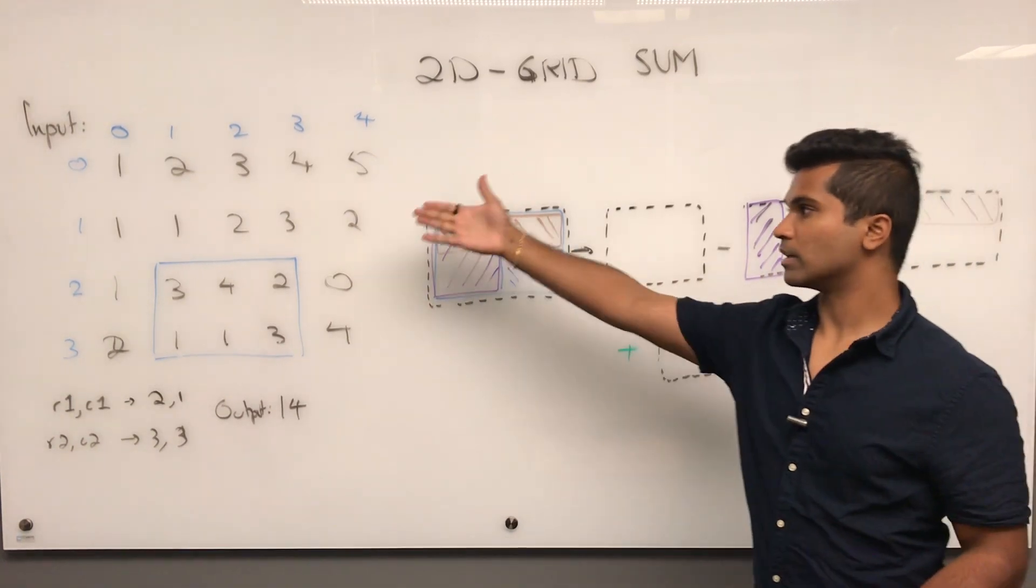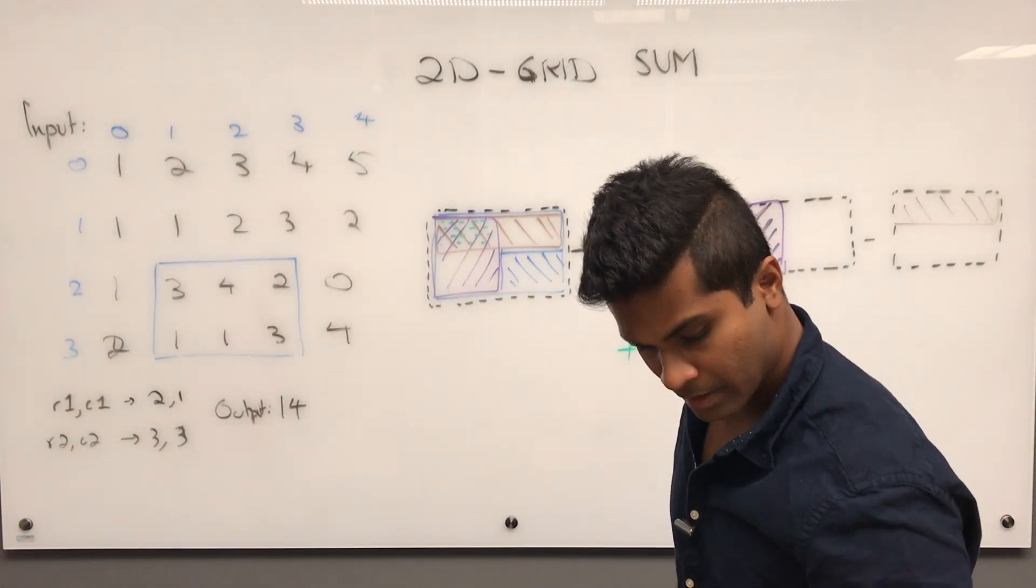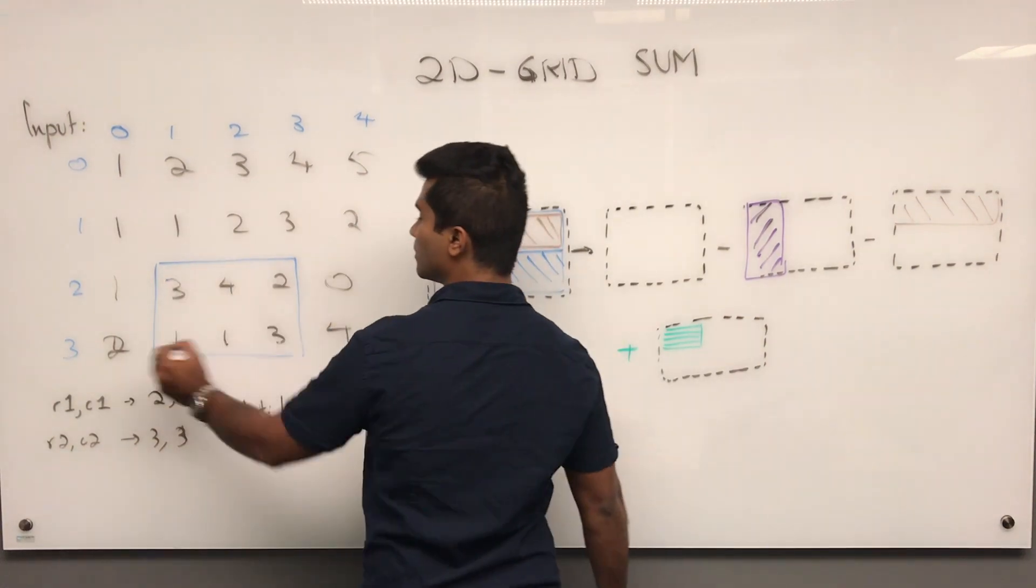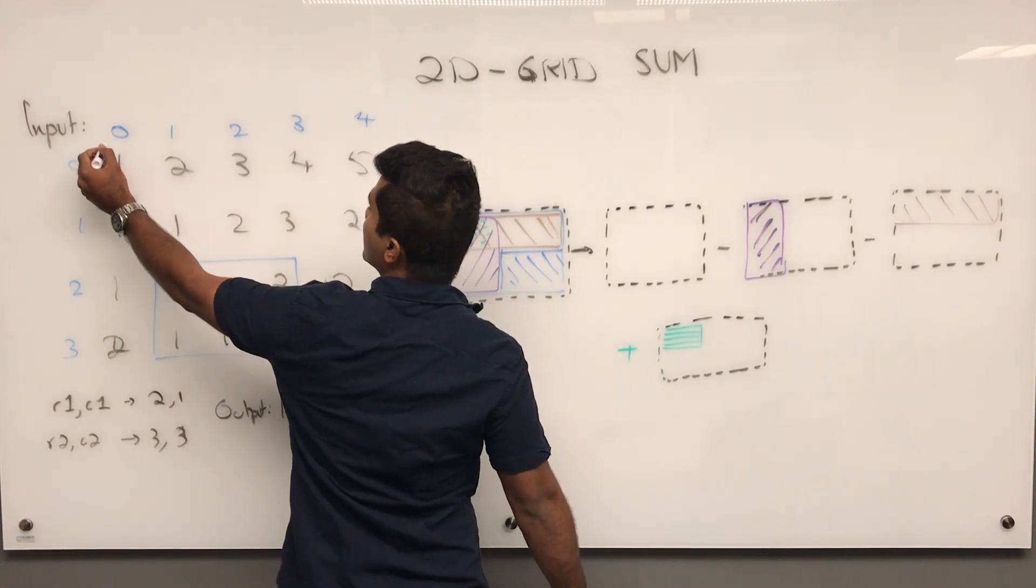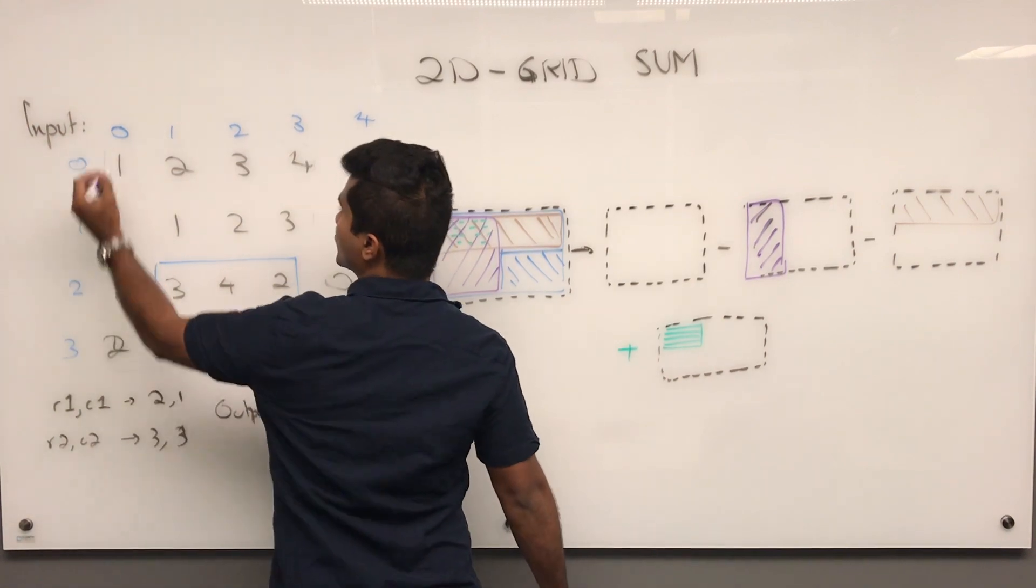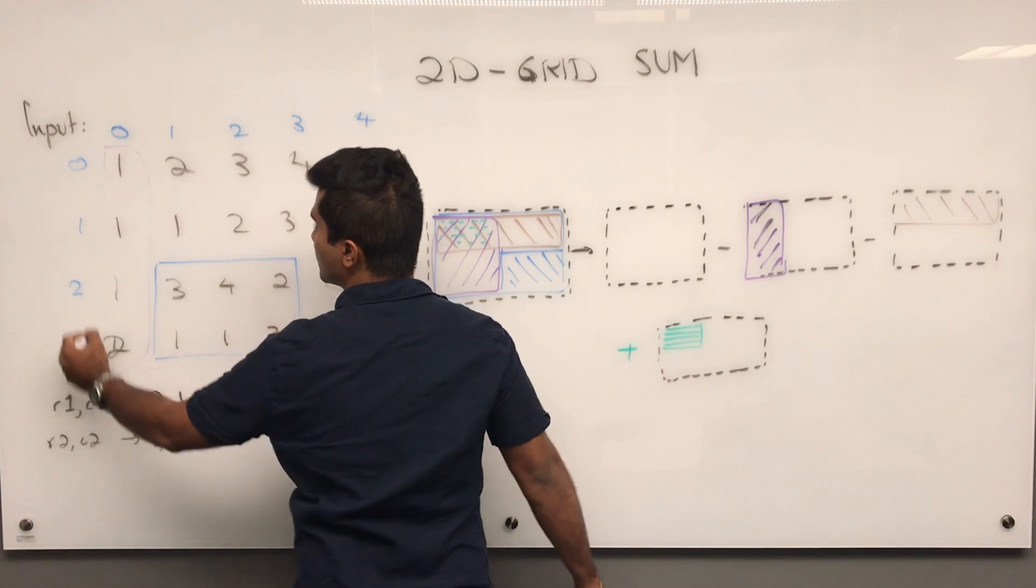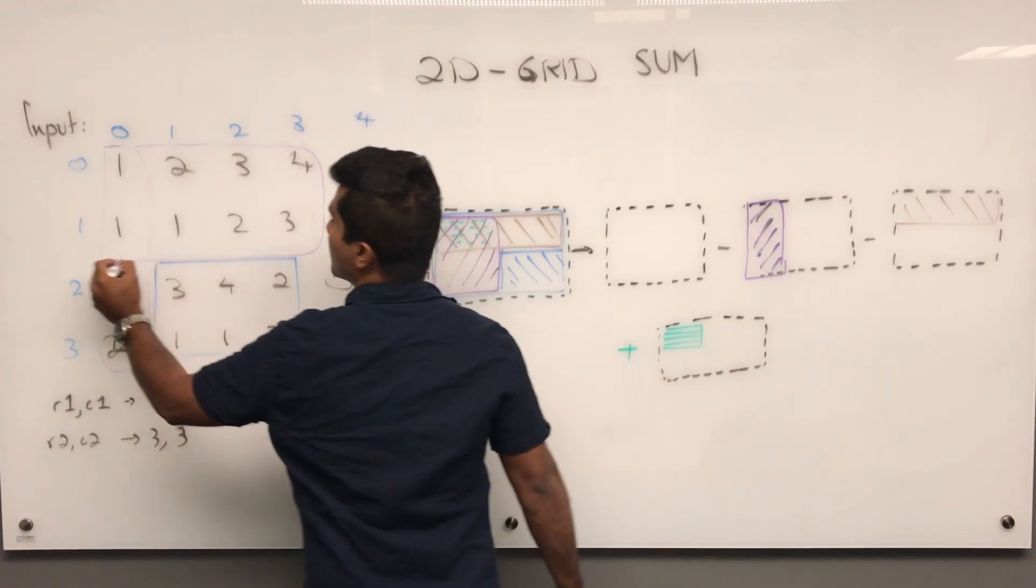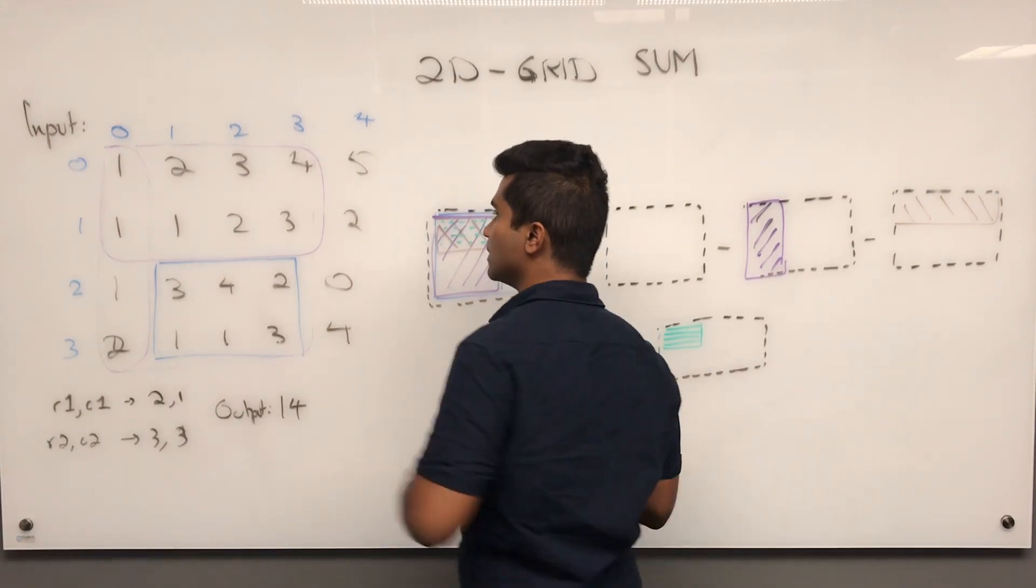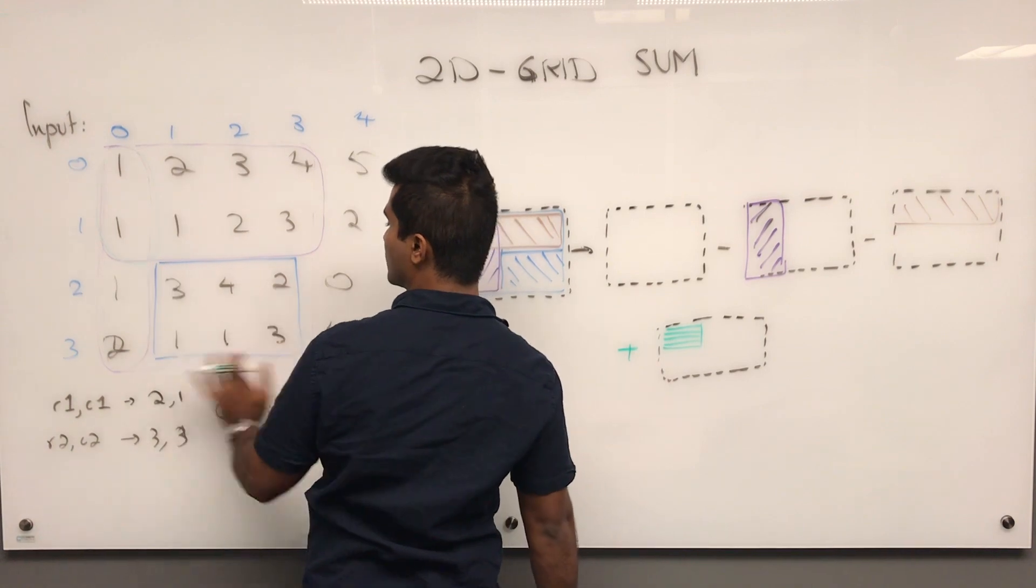So what that means is to do this rectangle, we can take this outer rectangle, subtract this guy and then this guy and then add back the overlap of these two which would be this green and then that will give us the sum of this.